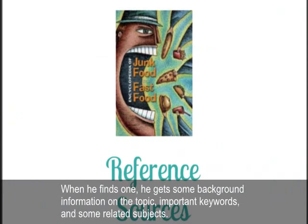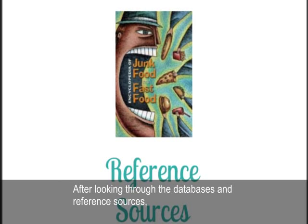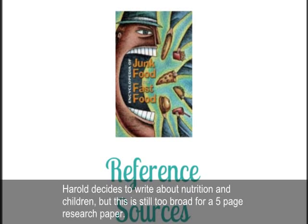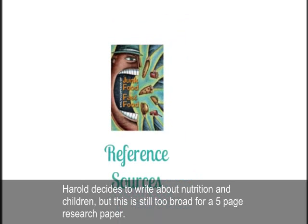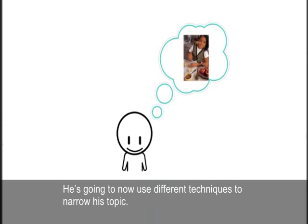When he finds one, he gets some background information on the topic, important keywords, and some related subjects. After looking through the databases and reference sources, Harold decides to write about nutrition and children. But this is still too broad for a five-page research paper. He's going to now use different techniques to narrow his topic.